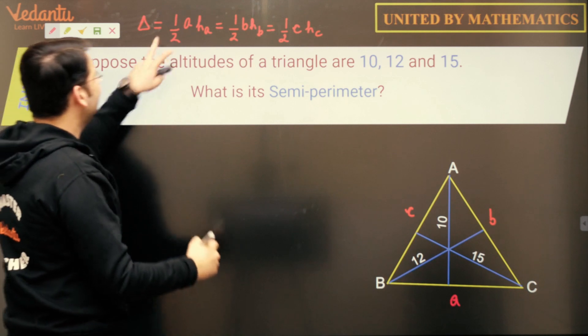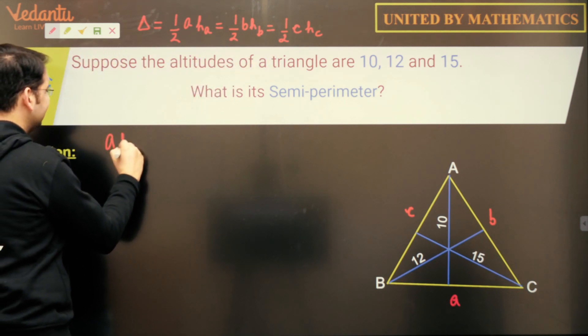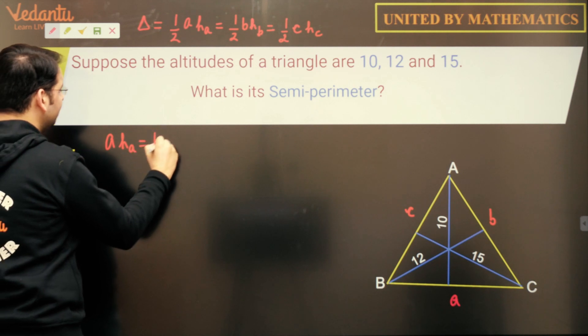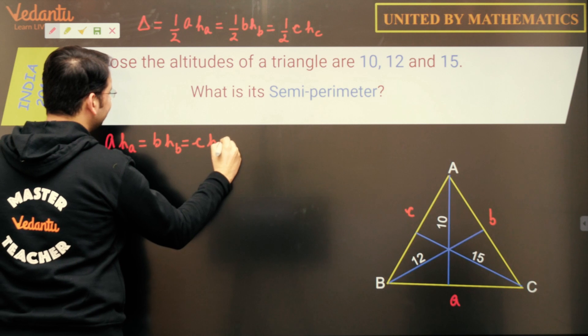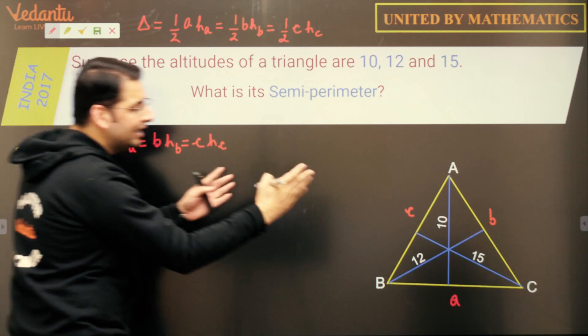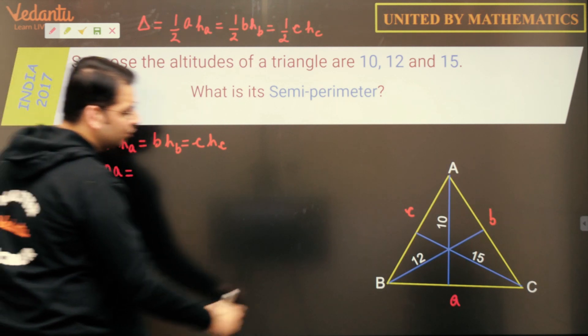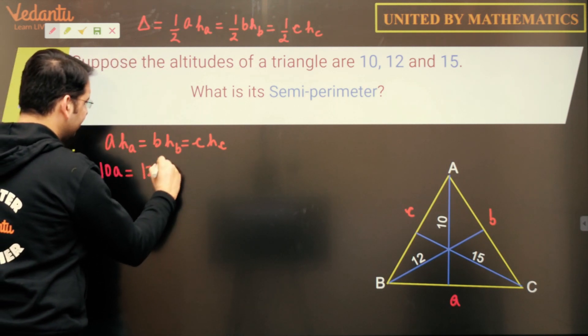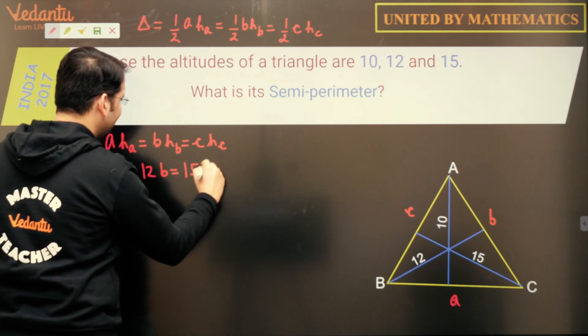So what we have here, if I eliminate half from all the three, I'll get A into HA is equal to B into HB is equal to C into HC. If I put the values of HA, HB and HC, I'll get 10A is equal to 12B is equal to 15C.